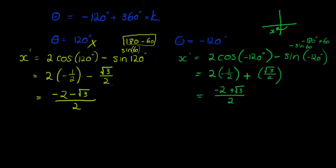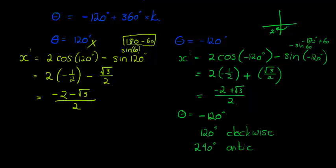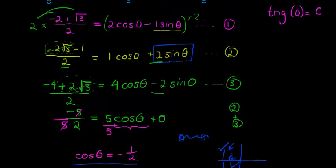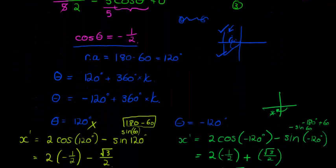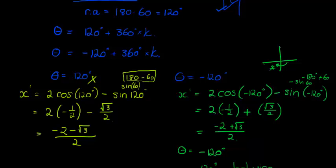So our angle of rotation is theta equals negative 120 degrees. We could express this as 120 degrees clockwise, since clockwise is represented by negative angles. Alternatively, it is 360 minus 120 equals 240 degrees anticlockwise. Both answers are correct. This is a long question, and that's why it's the last one — these aren't easy, but once you get the gist of it, it's actually not that hard. Hope you got it — if you have any questions, ask. Thanks, cheers.